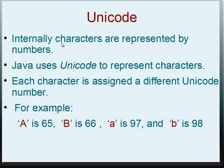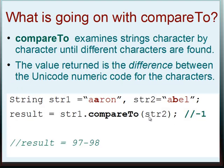Internally, characters are represented by numbers. Java uses Unicode to represent characters. Each character is assigned a different Unicode number. For example, A is 65, B is 66, lowercase a is 97, and lowercase b is 98.